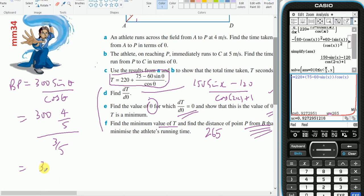Which means I've got 300 times 4 on 5 times 5 on 3. The 5's cancel. 3 goes into that 100 times. So the answer is 400 metres.